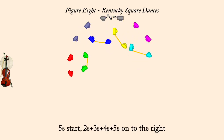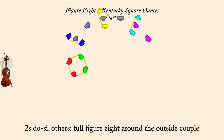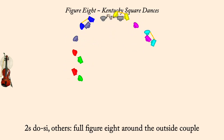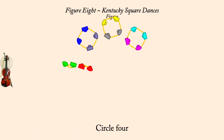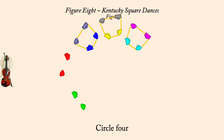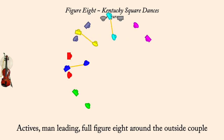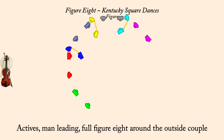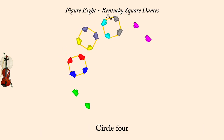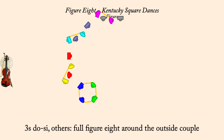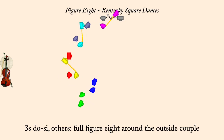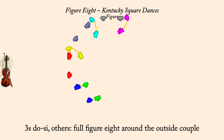Doe C or figure eight. Circle left four. On to the right, full figure eight around the outside couple. Circle left four. Next, on to the right, dough C or figure eight. Circle left four.